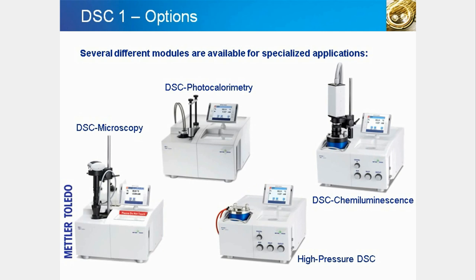The DSC-1 instrument can be fitted with optional accessories for specific applications. The slide shows different DSC modules offered by Mettler-Toledo: DSC microscopy, DSC photocalorimetry, high-pressure DSC, and DSC chemiluminescence. DSC microscopy is used to visually observe sample effects in the crucible and hence aid interpretation of the DSC curve. The visual information allows you to identify solid-solid transitions, to distinguish between overlapping processes such as melting and decomposition, to study the shrinkage behavior of fibers or films, or to identify the cause of an artifact in DSC curves.